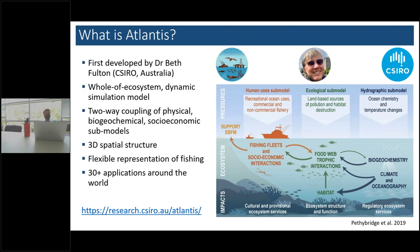So what's Atlantis? Atlantis is what you would call an end-to-end ecosystem model or whole-of-ecosystem model. It's a framework that attempts to capture or approximate all components of the ecosystem — from physics to socioeconomic components — going through food web interactions and biology. It was first developed by Beth Poulton at CSIRO. All these components are two-way coupled, so they interact with one another. It has a 3D spatial structure, allows for flexible representations of fishing, and has been used for about 25 to 30 years.